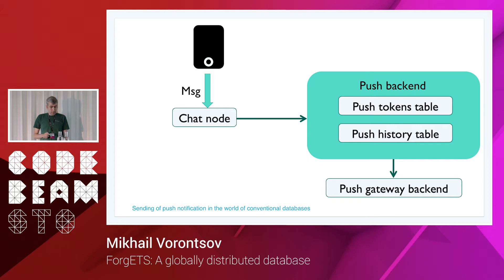There is one more caveat: the push history table has an update rate which is a function of total message rate. And when your total message rate is over 65 billion messages a day, you have to make your solution scalable.